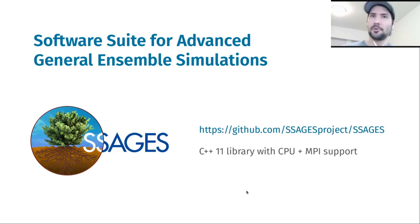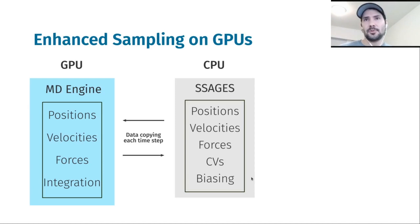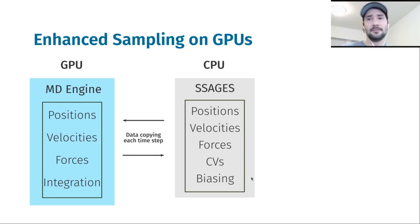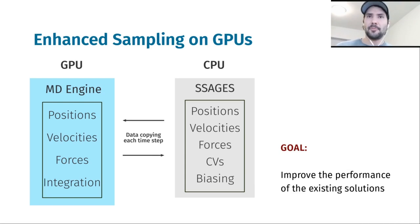These include LAMMPS, NAMD, among others, and currently the library supports computations on CPU either on a single machine or in a cluster through MPI. In some instances we also support molecular dynamics backends that work on GPUs, but currently we need to copy the system's data from GPU to CPU so we can compute the forces needed to bias the system, and then we have to move the data back to the GPU. Sometimes we need to do this after each integration step, and this can easily become a bottleneck of the computation, making us lose the advantages of integrating on a GPU.